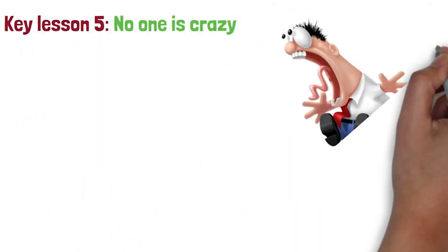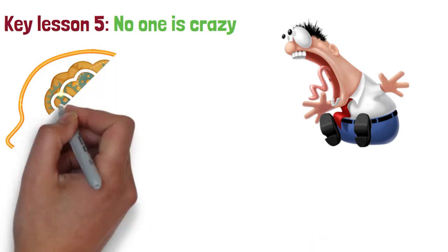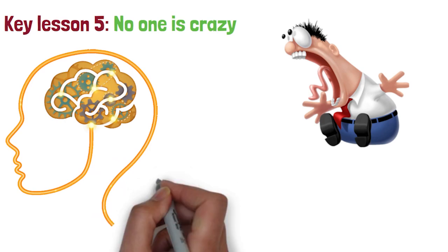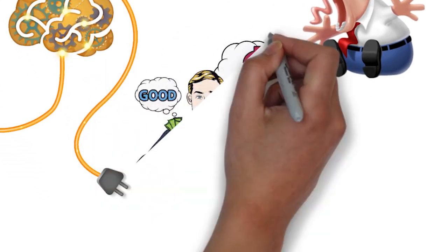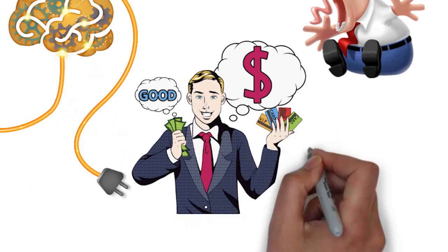Understanding the complexities of financial decision-making is essential, because every choice people make with money is influenced by their unique mental model of the world. People's behaviors with money may seem irrational or crazy, but there's always a rationale behind their actions.